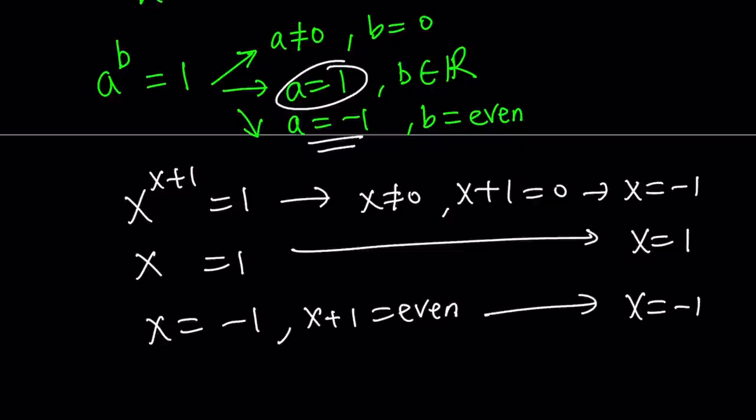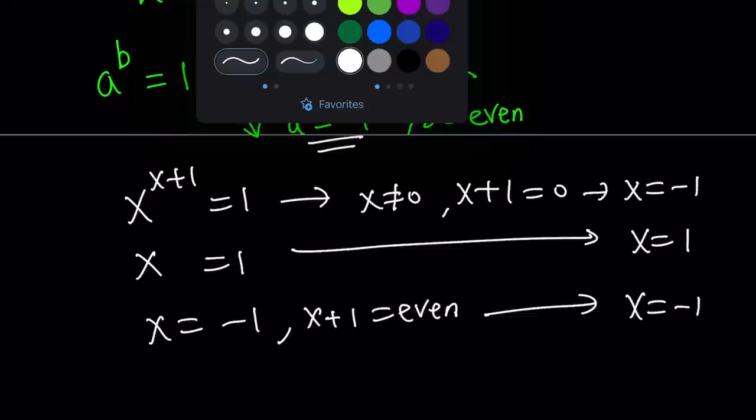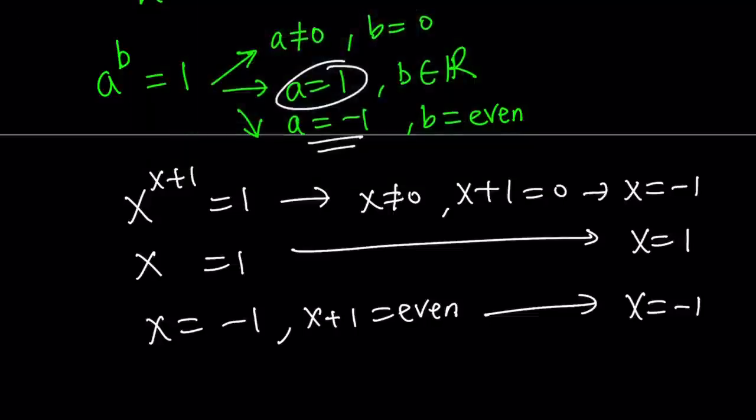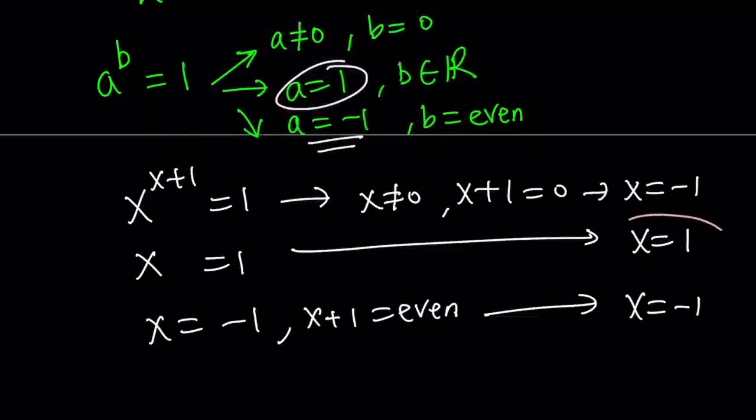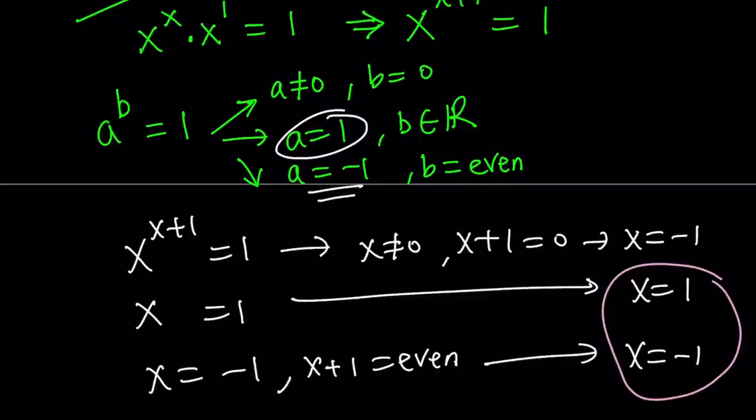So x equals negative 1 is the other possibility. But we already talked about it. We got x equals negative 1. So there are two solutions. Make sense? We have two solutions. And those solutions are negative 1 and positive 1. Now we've got to go ahead and check these, but it is going to work because we went by the cases and those cases always work.